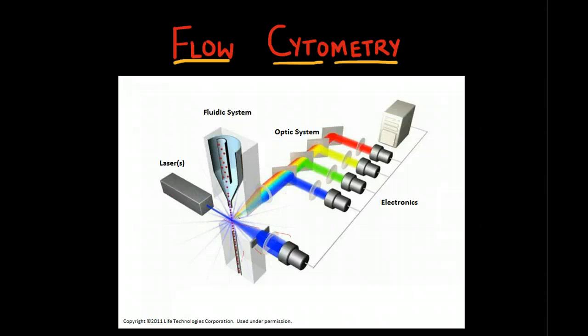You have the lasers, your fluidic system, your optical system, and your electronics. All of this together works as the backbone for the flow cytometer. Let's break it down and try to understand each component.